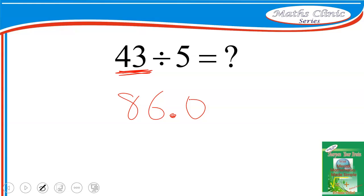So this decimal point is moved backwards once and so the answer becomes 8.6, which means 43 divided by 5 is 8.6. It's as simple as that.